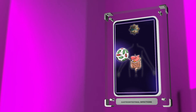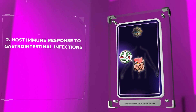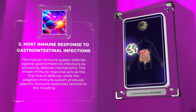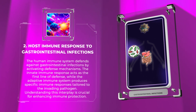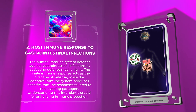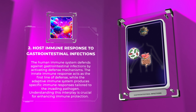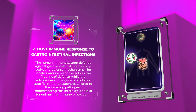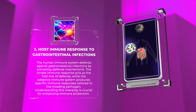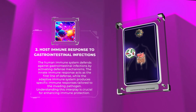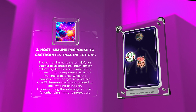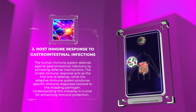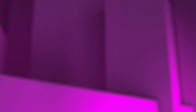The human immune system defends against gastrointestinal infections by activating defense mechanisms. The innate immune response acts as the first line of defense, while the adaptive immune system produces specific immune responses tailored to the invading pathogen. Understanding this interplay is crucial for enhancing immune protection.